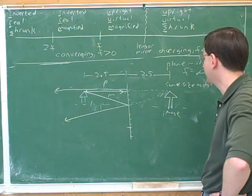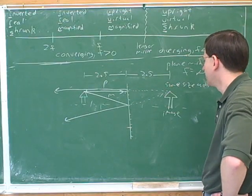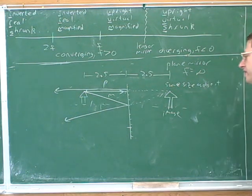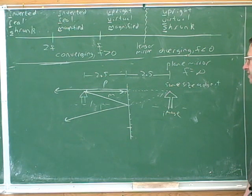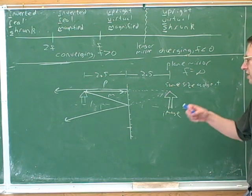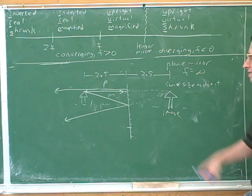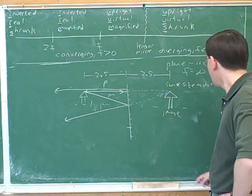Let's talk a little bit more about the idea of magnification. Let's actually figure out the magnification here. This problem didn't ask us for that, but it could have. Let's figure out the magnification of this image for question one. Let's go back to the numbers we got from question one: 2.5 and 2.5.